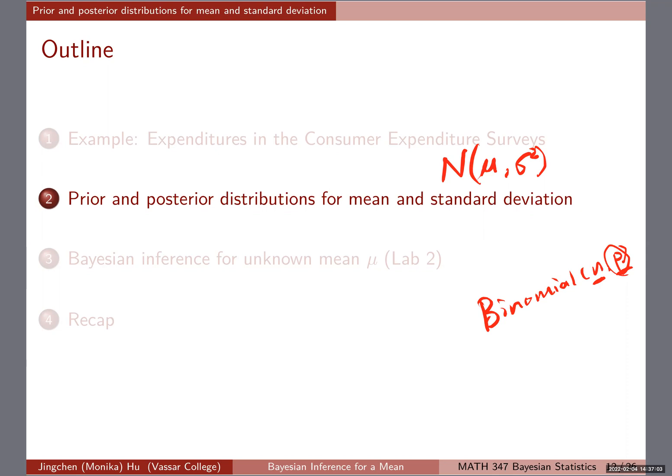For the normal, if both μ and σ are unknown, then we have two parameters. We're going to start with simpler cases where we fix or assume that one is known so I only need to work with the other, but it's important to recognize that.